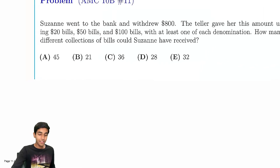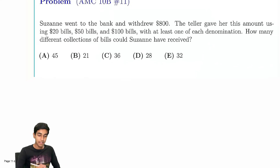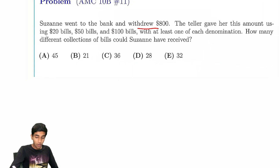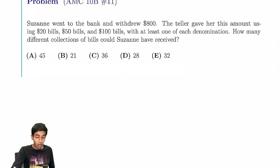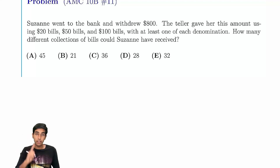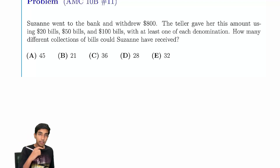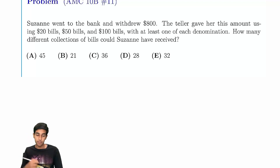Let's learn how to solve this problem from the AMC 10. Suzanne went to the bank and withdrew $800. The teller gave her this amount using $20 bills, $50 bills, and $100 bills, with at least one of each denomination. How many different collections of bills could Suzanne have received?